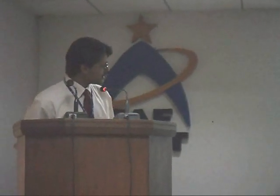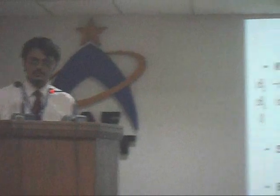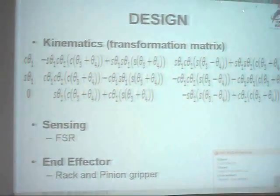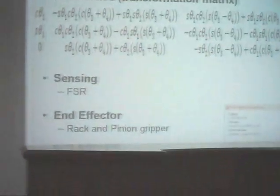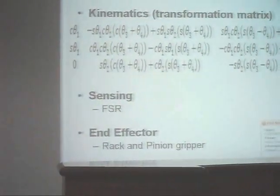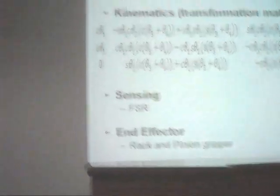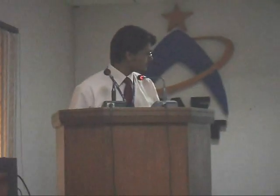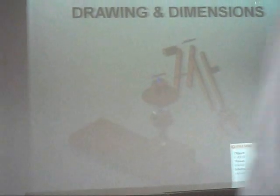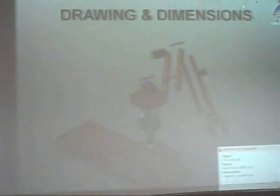For sensing on the gripper, we have used FSR, which is a force sensitive resistor. The end effector method — the gripper mechanism — is rack and pinion. This is the design of the robot: the base, the rotating base, the shaft, the arms — the lower and the upper arm — along with the gripper.